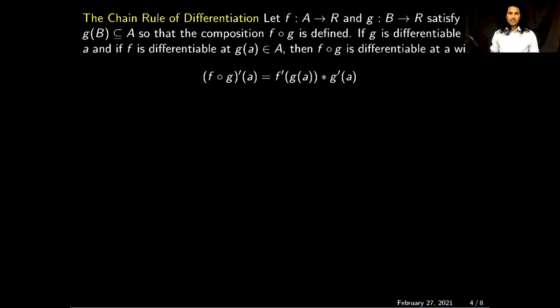Next, we will prove the chain rule of differentiation. The statement says: if f and g are both differentiable functions, the composition f∘g is defined, g is differentiable at a, and f is differentiable at g(a), then f∘g is also differentiable at a, and its derivative is given by: (f∘g)′(a) = f′(g(a)) times g′(a).